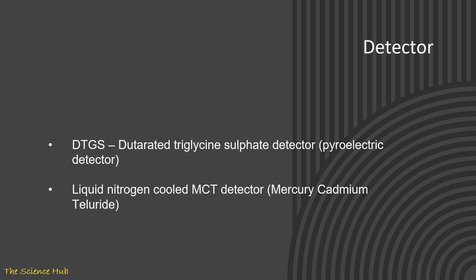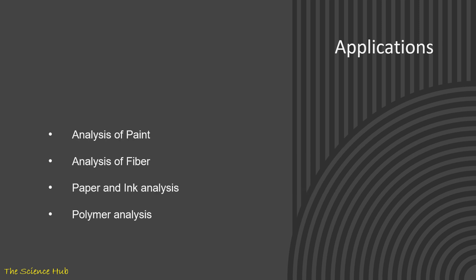There are two types of detector generally used in FTIR: DTGS and MCT type of detector. DTGS means deuterated triglycine sulfate detector, which is a pyroelectric type of detector. Next is liquid nitrogen cooled MCT detector, which is known as mercury cadmium telluride type of detector.